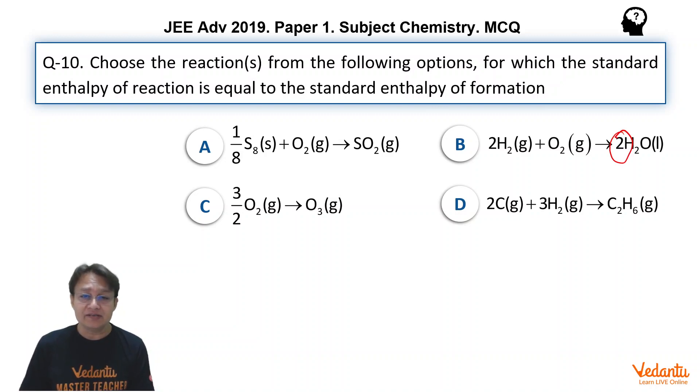In third option, we can see O3 is getting formed from O2. It's alright because O2 is the most stable state and we are forming O3. So, third option is also perfectly alright which qualifies for enthalpy of formation.